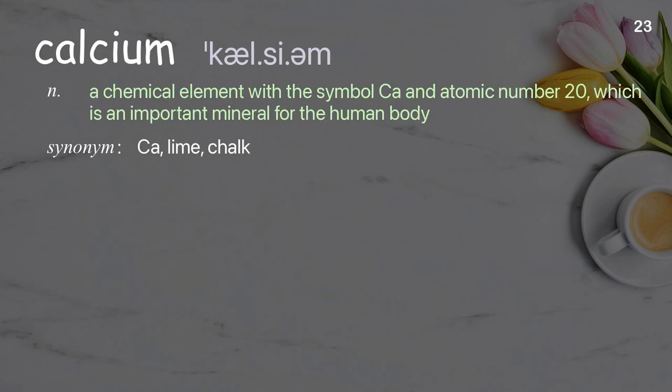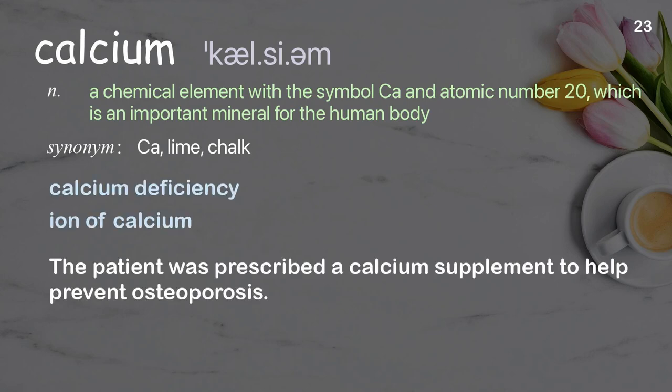Calcium. A chemical element with the symbol CA and atomic number 20, which is an important mineral for the human body. Examples: Calcium deficiency, ion of calcium. The patient was prescribed a calcium supplement to help prevent osteoporosis.